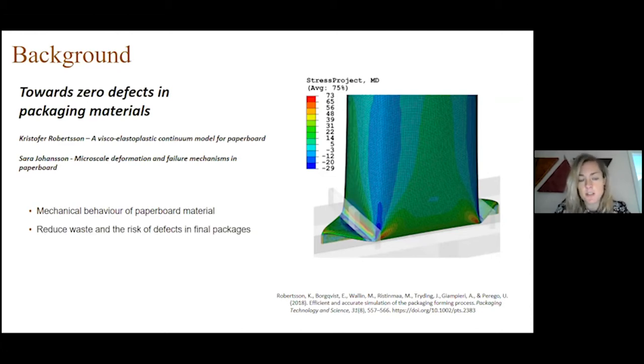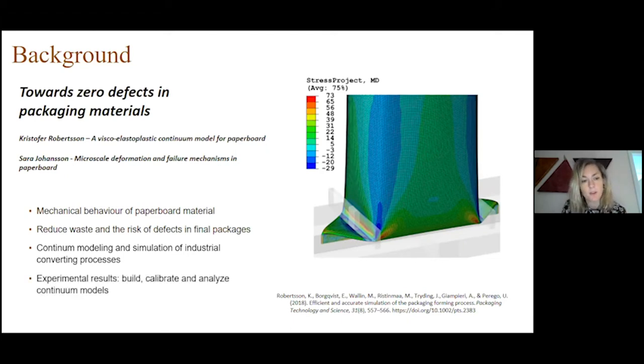The motivation for this is to reduce waste and the risk of defects in final packages. The packaging industry uses continuum modeling to simulate industrial converting processes. For example, this figure to the right shows a snapshot of stress field in a package during forming. We can see zones of high localized stress around the fold and close to the corner. Experimental results can be used to build, improve, calibrate and analyze continuum models.